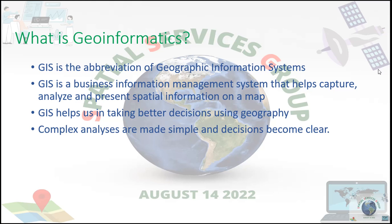GIS is the abbreviation of Geographic Information Systems. GIS is a business information management system that helps capture, analyze, and present spatial information on a map. GIS helps us in taking better decisions using geography. Complex analyses are made simple and decisions become clear.